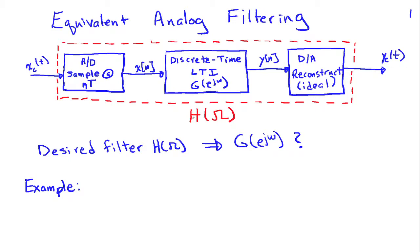This process is equivalent to some continuous-time filtering action H(Ω). So the question is: how do I translate my specifications on H(Ω) to specifications on the discrete-time filter G(e^jω), that is, between the analog-to-digital conversion and the digital-to-analog conversion?